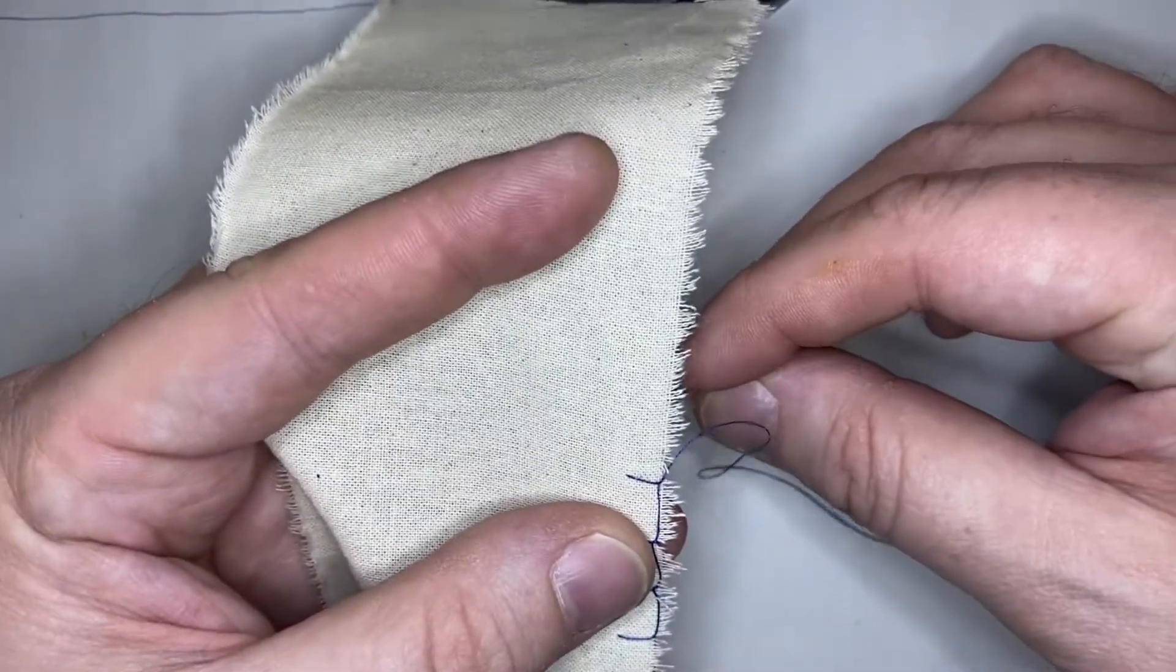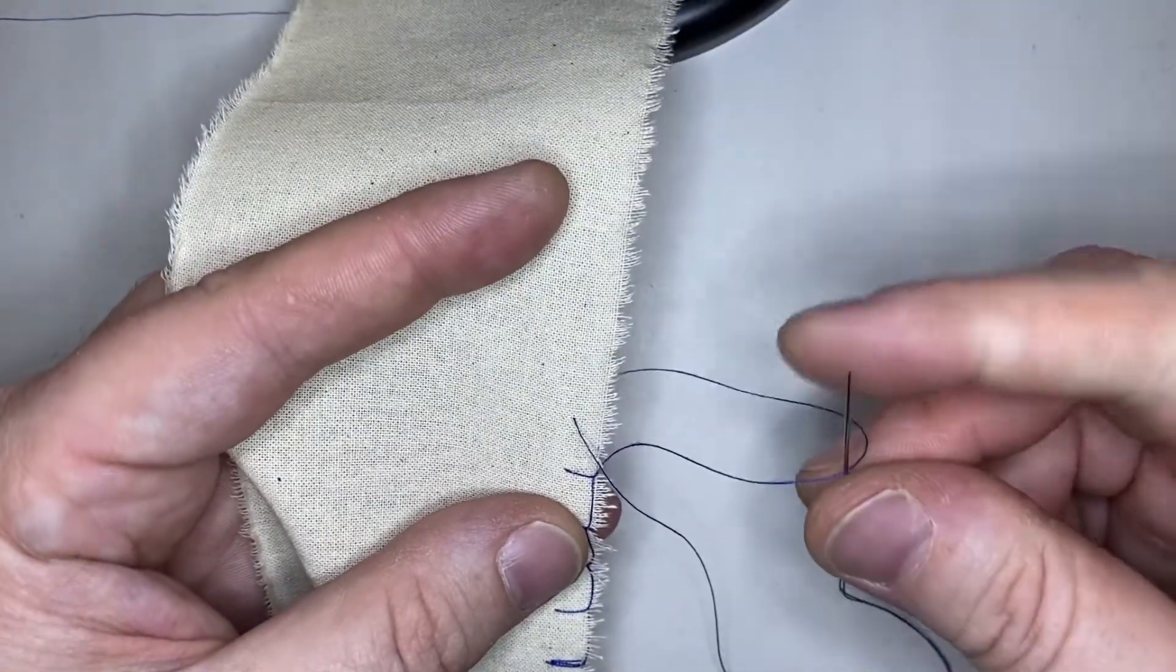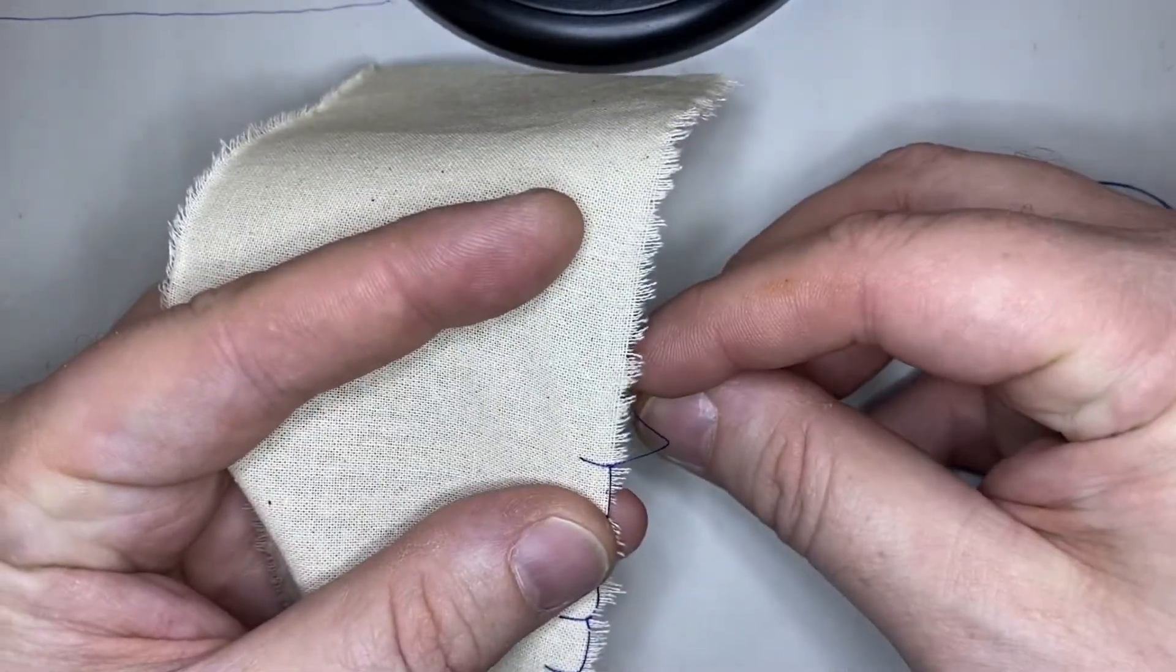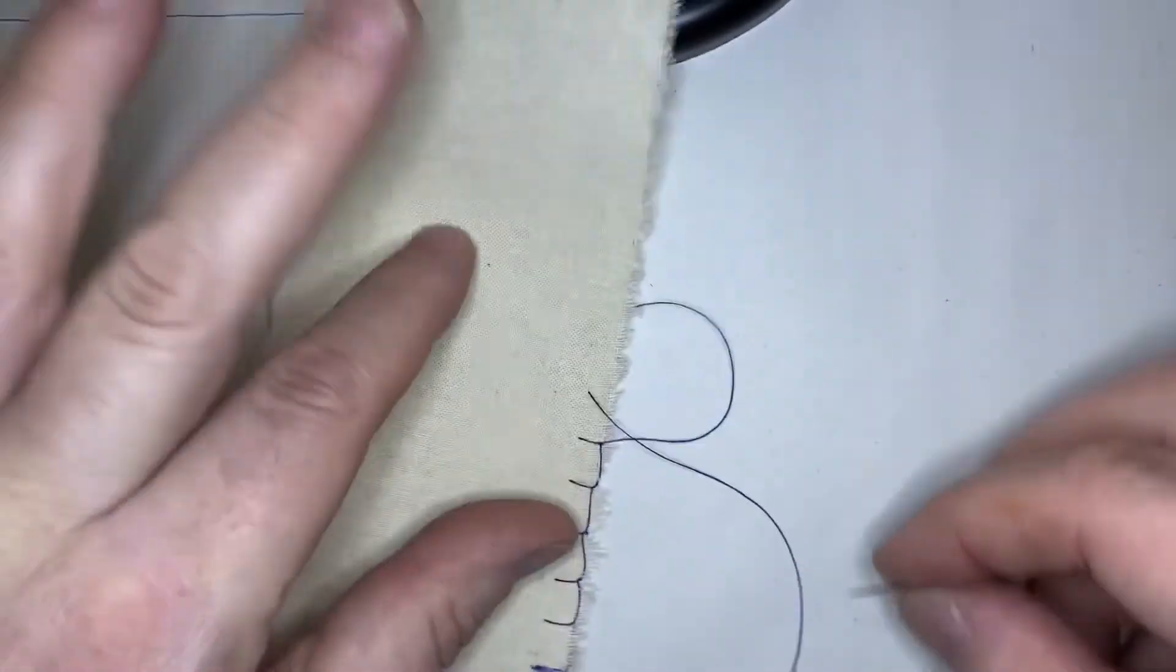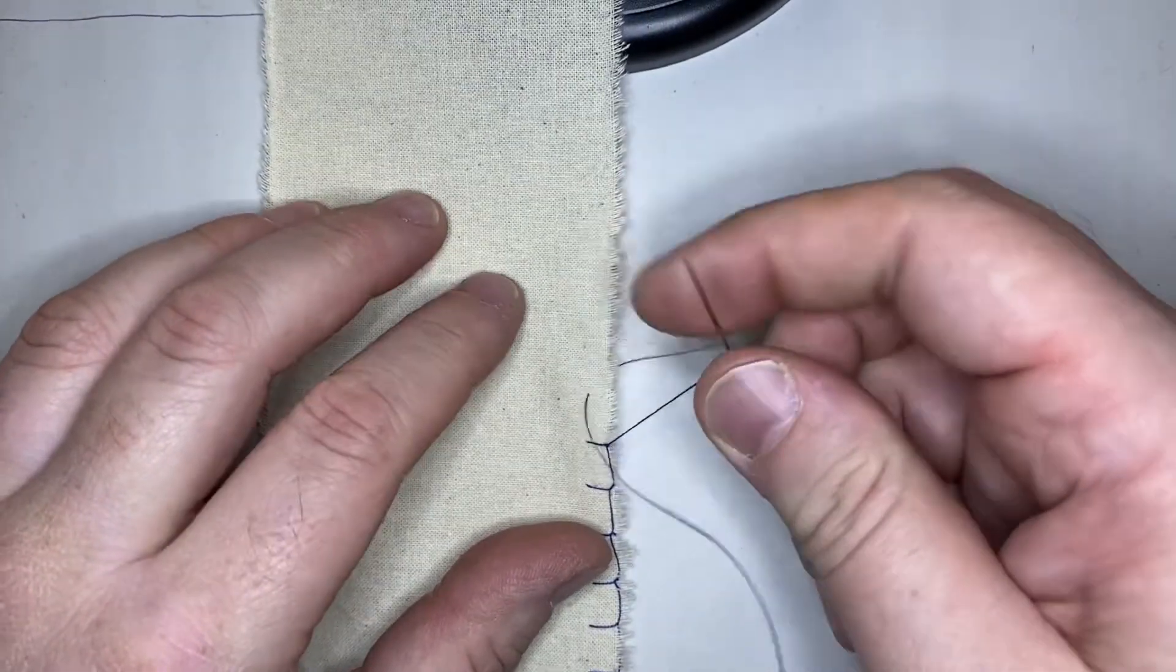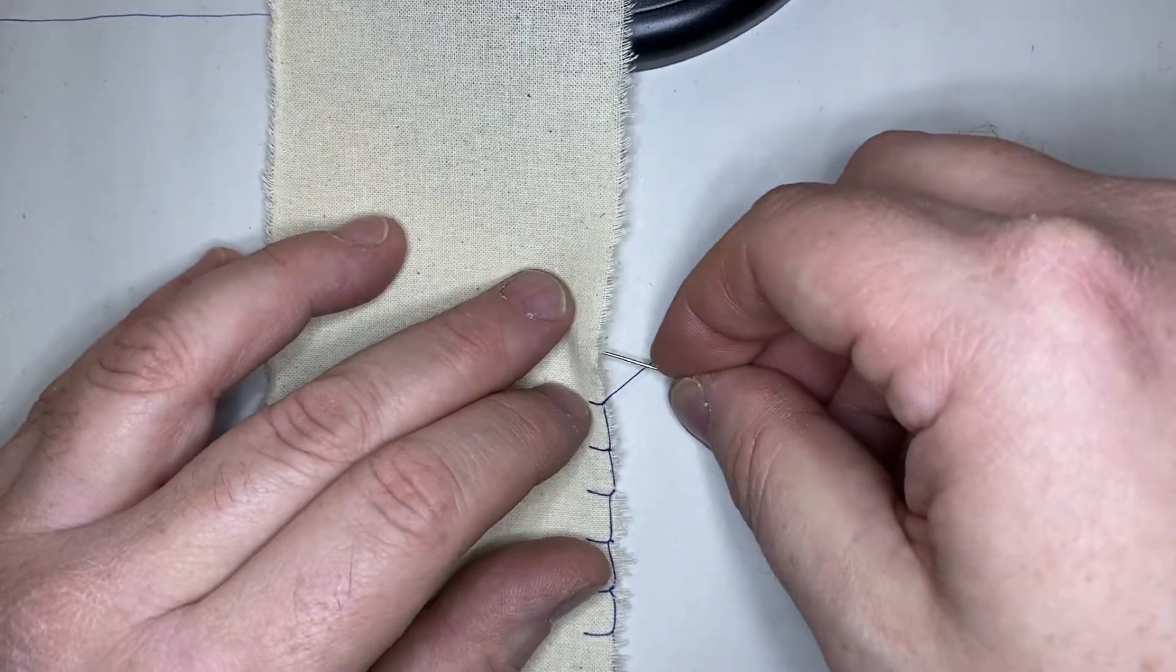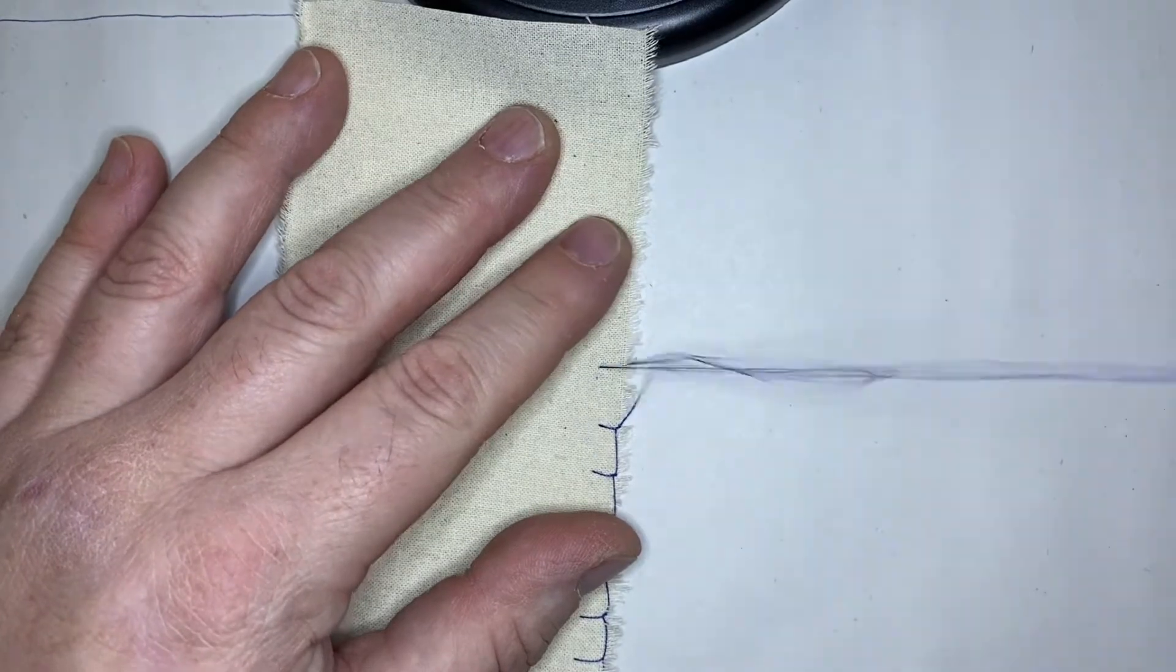So, come from the back, and as your loop gets smaller, go through the back of your loop. Come from the back, and go through the back of that loop. Come from the back, and go through the back of that loop.